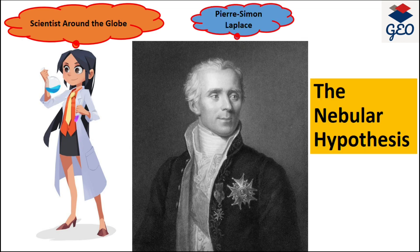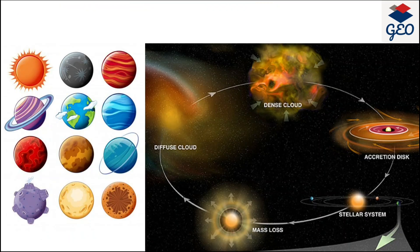But in 1796, a German mathematician proposed a hypothesis which is widely accepted nowadays, known as the nebular hypothesis. According to the nebular hypothesis, the planets form at the same time from the same cloud as the star. What is the same cloud here?